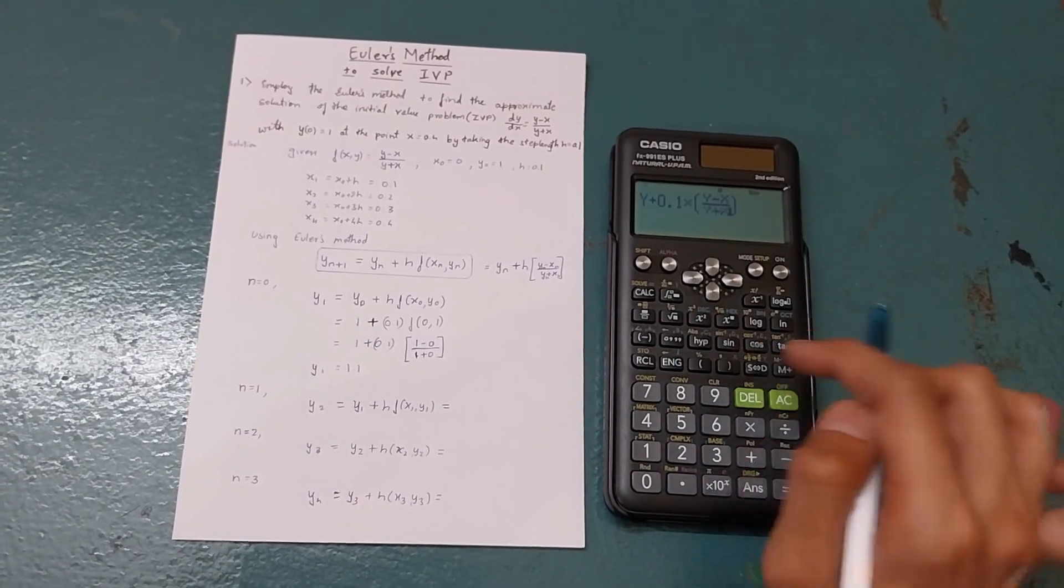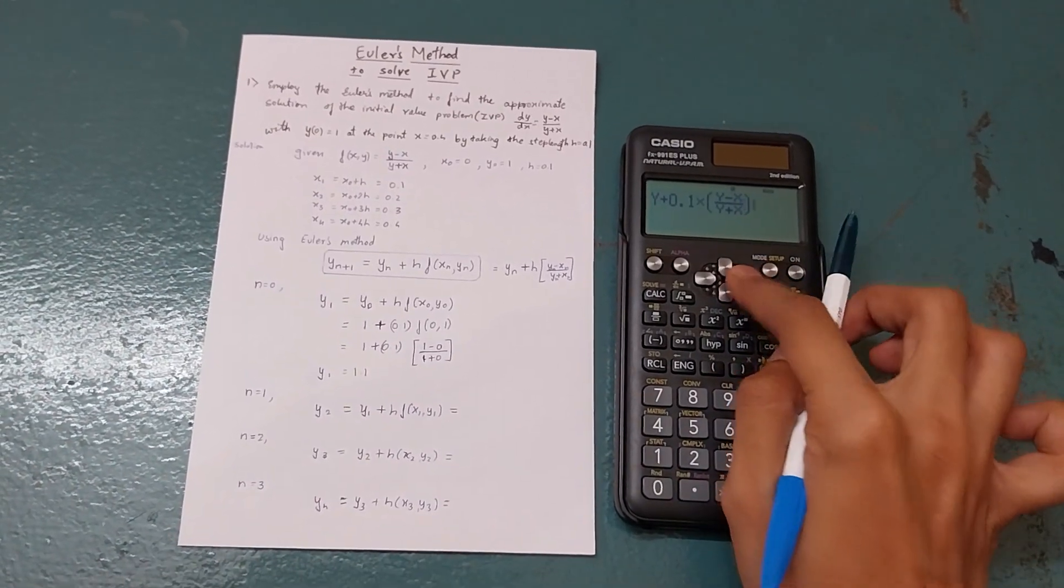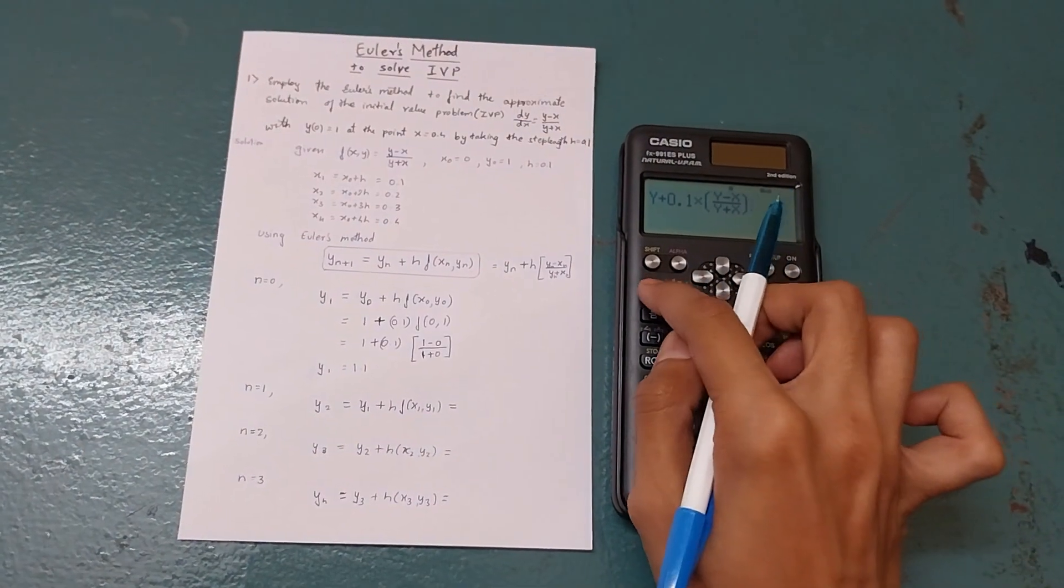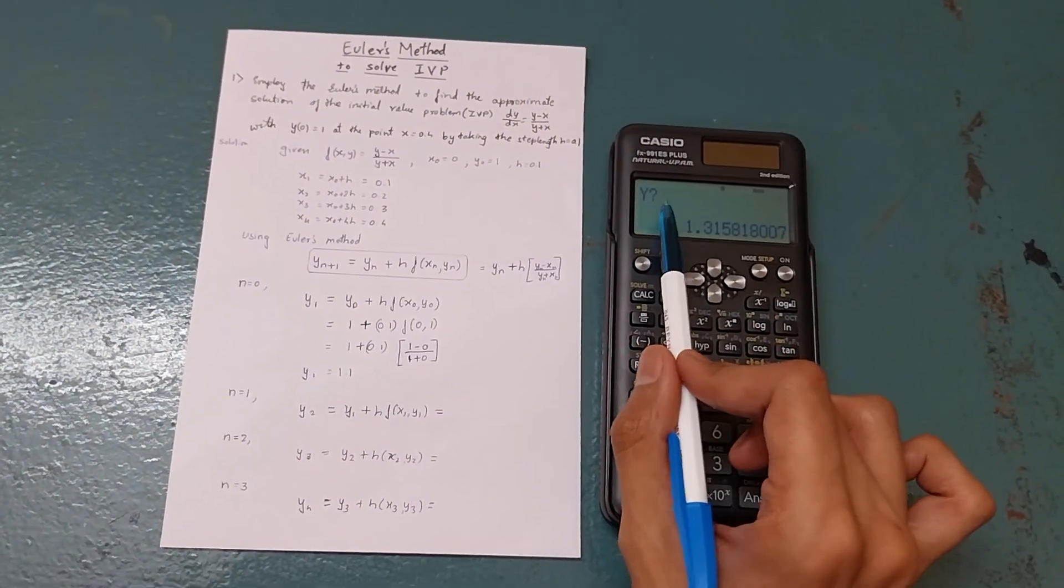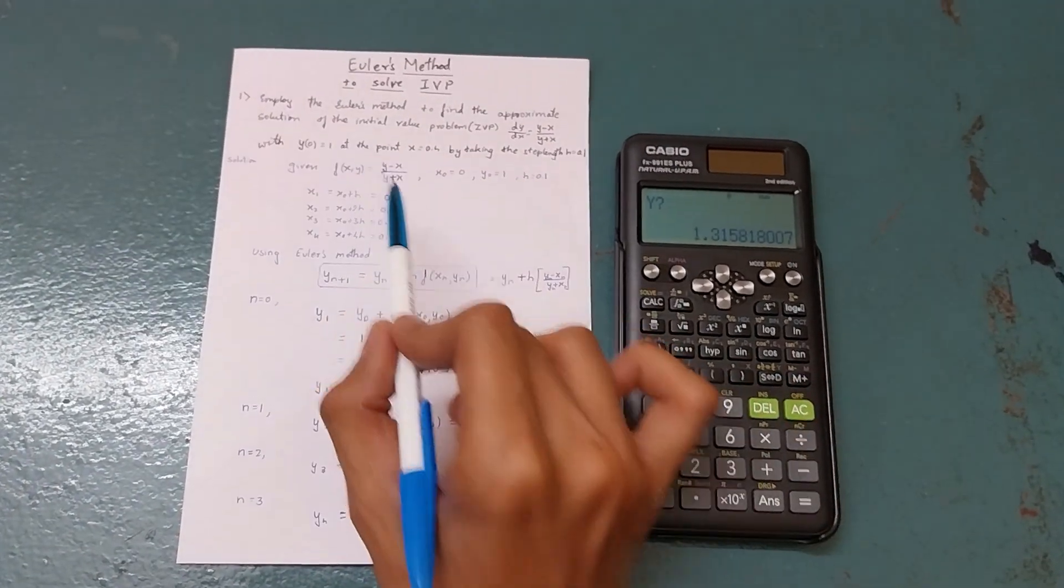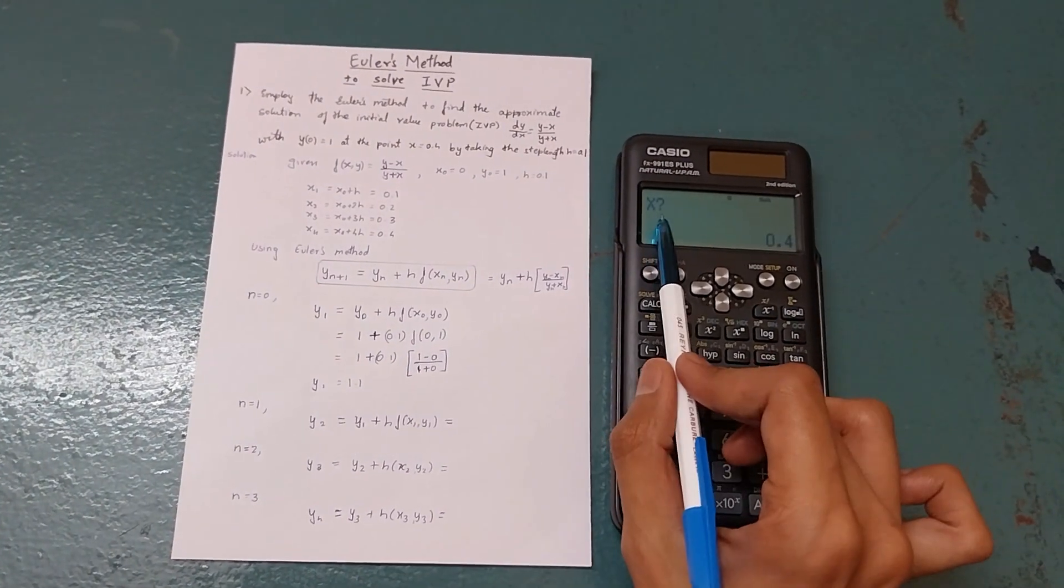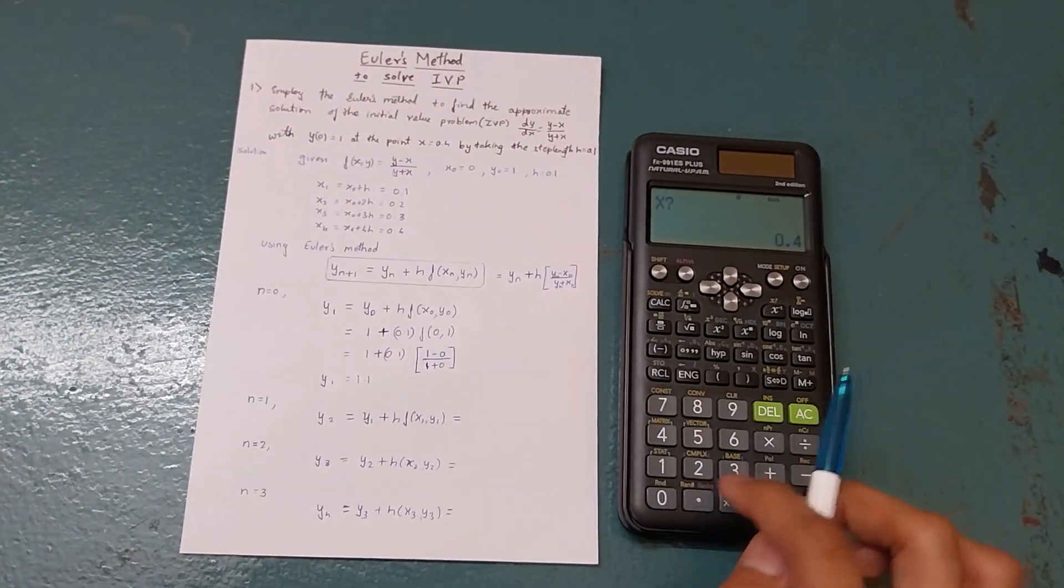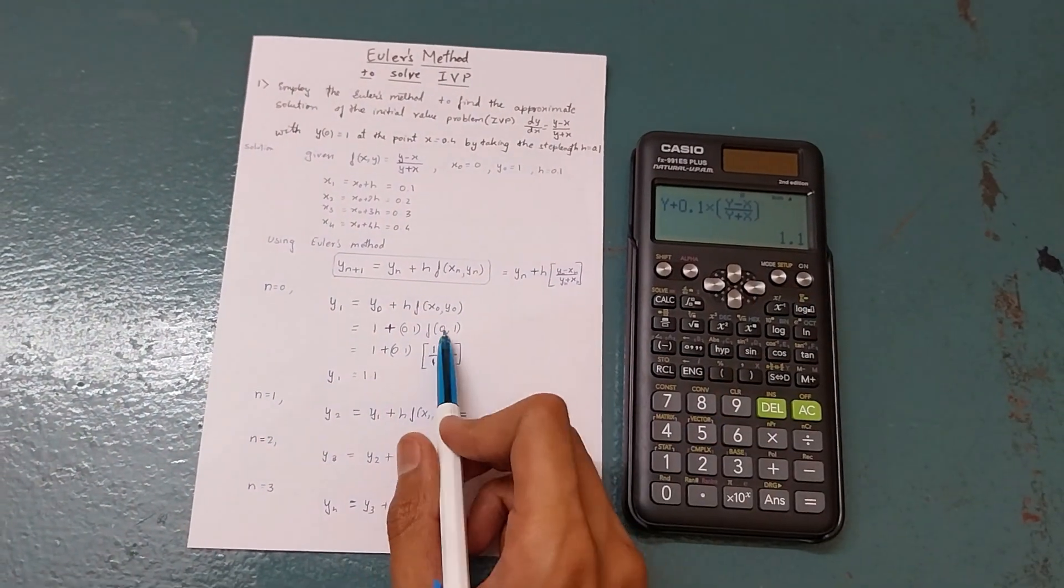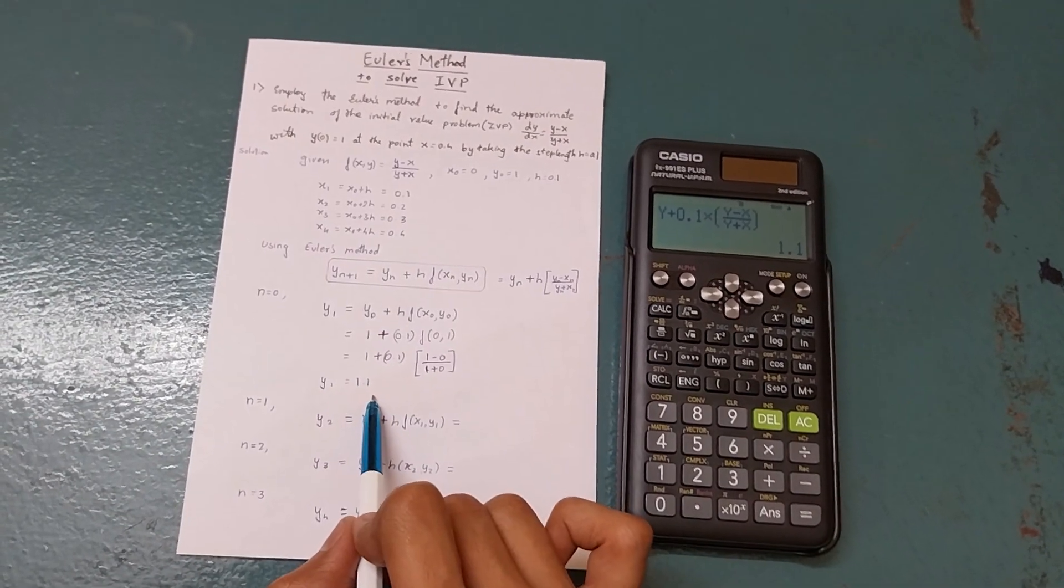Now press calc. It will ask you initial value only one time. y naught is 1 so press one, and x naught is zero so zero. Here you got answer as 1.1, so you substituted all and the answer is 1.1.